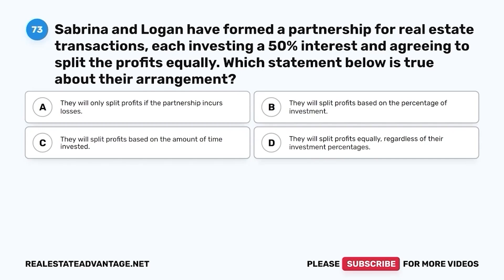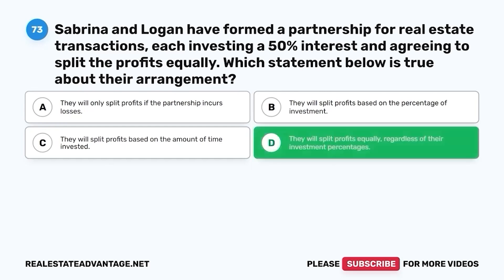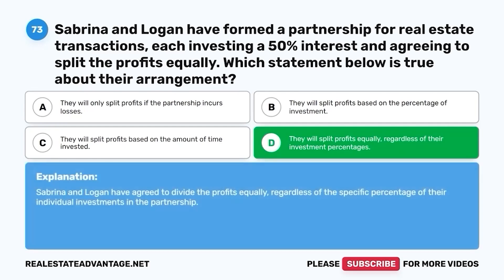Question 73. Sabrina and Logan have formed a partnership for real estate transactions, each investing a 50% interest and agreeing to split the profits equally. Which statement below is true about their arrangement? A. They will only split profits if the partnership incurs losses. B. They will split profits based on the percentage of investment. C. They will split profits based on the amount of time invested. D. They will split profits equally, regardless of their investment percentages. The correct answer is D. Sabrina and Logan have agreed to divide the profits equally, regardless of the specific percentage of their individual investments in the partnership.